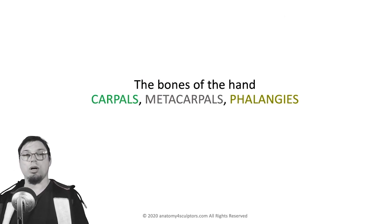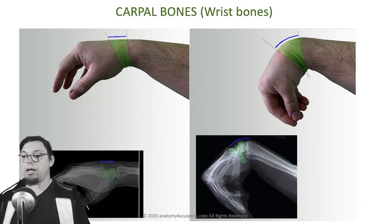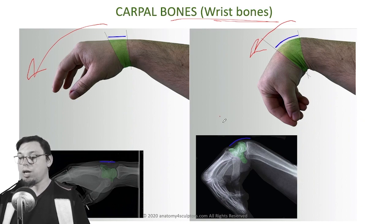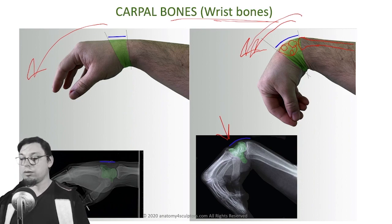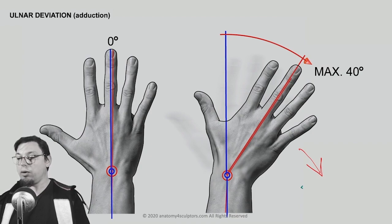Now it's time to talk about the bones of the hand. First, the carpal bones — basically they are the bones of the wrist. When you bend your wrist, those eight small carpal bones are the ones which create this arch here. You have the radius here and then those eight carpal bones.